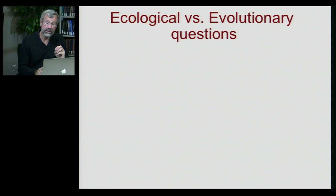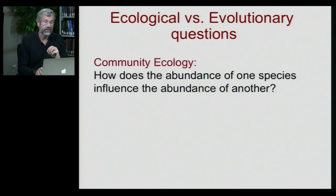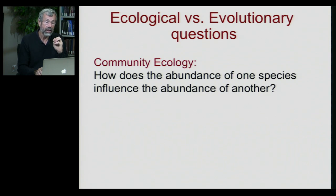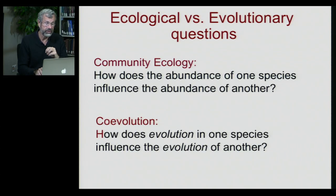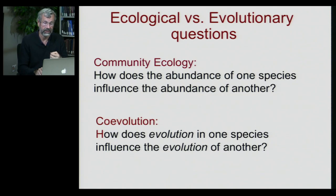When contrasting ecological versus evolutionary questions: in community ecology, it's still about abundance and distribution — how does the abundance of one species influence the abundance of another? With coevolution, we're asking how does evolution in one species influence the evolution of another?